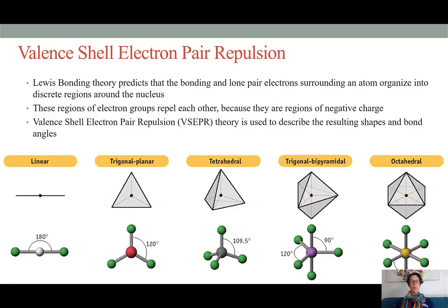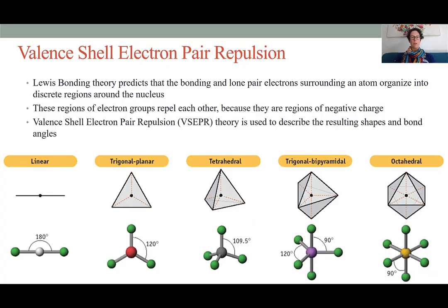Valence shell electron pair repulsion is sometimes abbreviated as VSEPR. Our previous lessons on Lewis bonding theory allowed us to predict the bonding interactions between atoms and to determine the number of bonding groups versus lone pair electrons surrounding an individual atom. These bonding and non-bonding electrons will arrange themselves around an atom such that they are as far apart from each other as possible because the negative charge of the electrons is repelling. This gives us a series of predictable shapes that are described by VSEPR theory.